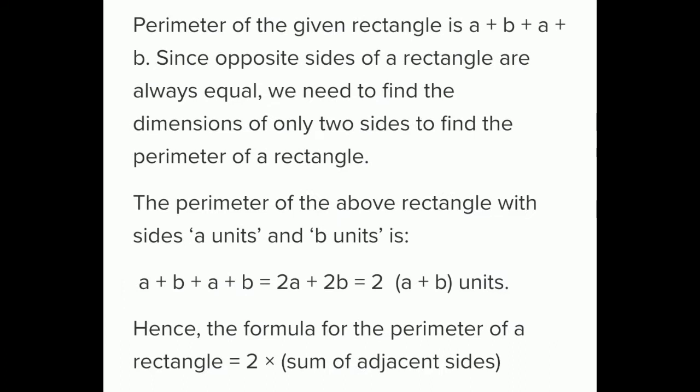The perimeter of the rectangle is A plus B plus A plus B. Since opposite sides of a rectangle are always equal, we only need two dimensions to find the perimeter. This can be written as A plus B plus A plus B, where there are two A's and two B's. Taking 2 as common, we get 2 into (A plus B) units. This is the formula for the perimeter of a rectangle: 2 into the sum of adjacent sides.